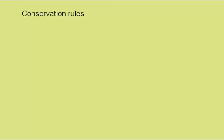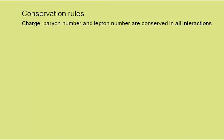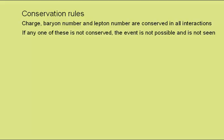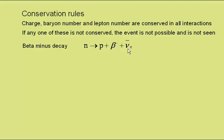Conservation rules. Charge, baryon number, and lepton number are conserved in all interactions. If any one of these is not conserved, the event is not possible and is not seen. First to look at the familiar case of beta-minus decay, in which a neutron becomes a proton, plus a beta-minus particle, or electron, plus an electron anti-neutrino.